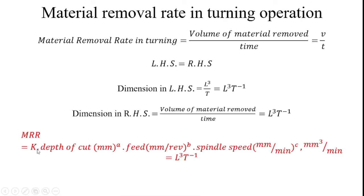For that reason, I use the K value. Every depth of cut has a different value with every workpiece material, so I can find the arbitrary exponent for depth of cut, feed rate, and spindle speed for different workpiece materials. Likewise, you can develop the mathematical model for your experiment. Thank you.